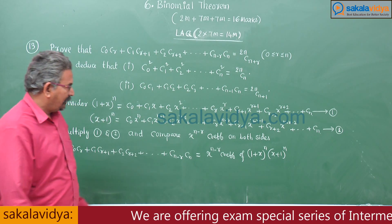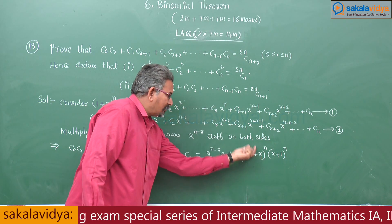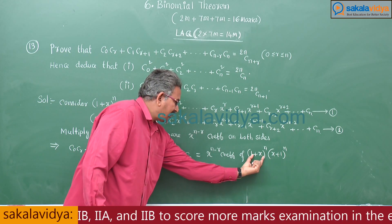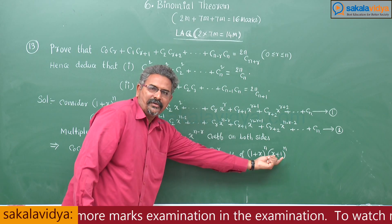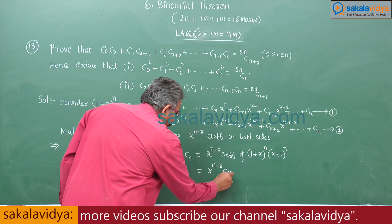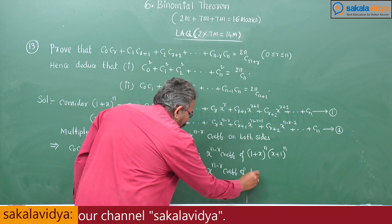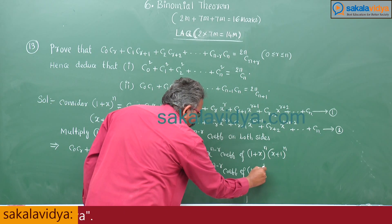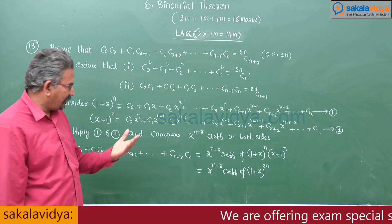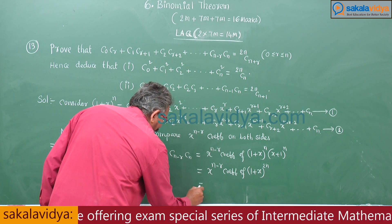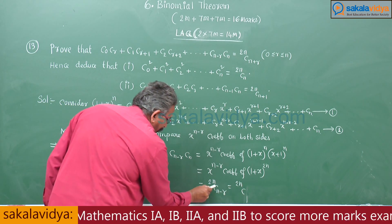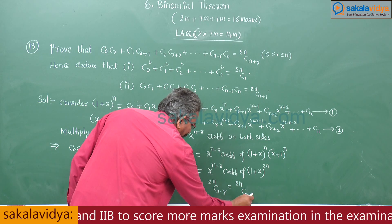Now I ask: are (1+x)ⁿ and (x+1)ⁿ the same? Yes, they are the same. So that means (1+x)ⁿ · (x+1)ⁿ = (1+x)²ⁿ. Therefore, the coefficient of xⁿ⁻ʳ in (1+x)²ⁿ is simply 2nCₙ₋ᵣ, which equals 2nCₙ₊ᵣ. Hence, the result is proved.